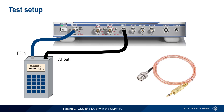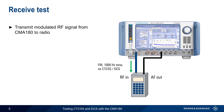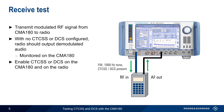We'll also need to configure the radio with the desired CTCSS tone or DCS code, which can usually be done directly through the radio's user interface. We'll start with receive testing. The first step is to transmit modulated RF from the CMA180 to the radio under test. In this example, we'll be using an FM signal modulated with a 1000 Hz tone. With no CTCSS or DCS configured, the radio should output demodulated audio, which can then be monitored from the CMA.